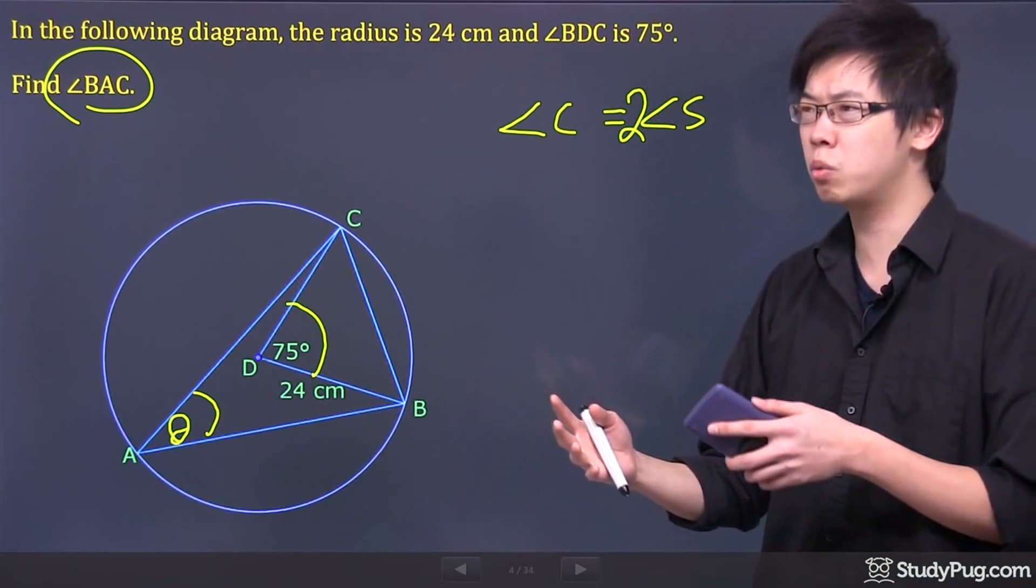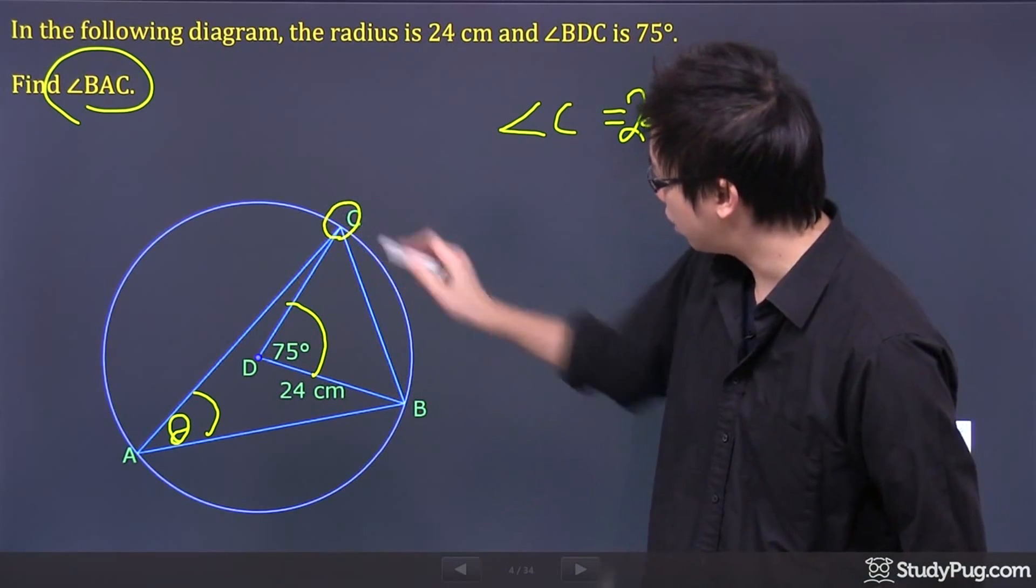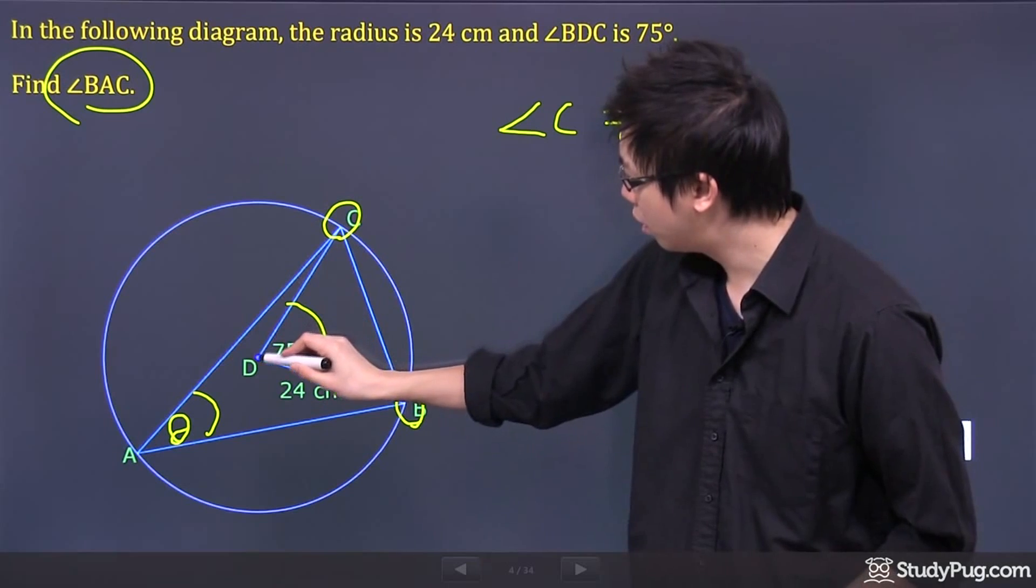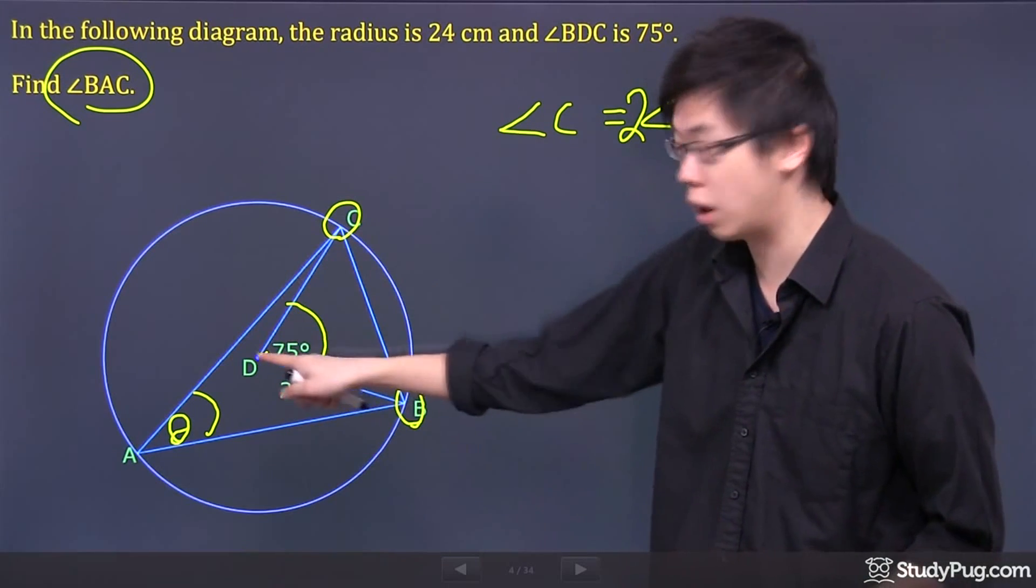Now, how do you know if they're really the inscribed or the center? Well, the central angle is always from a point and another point, and it forms with the center line, the center point. So, this is your central angle right here.